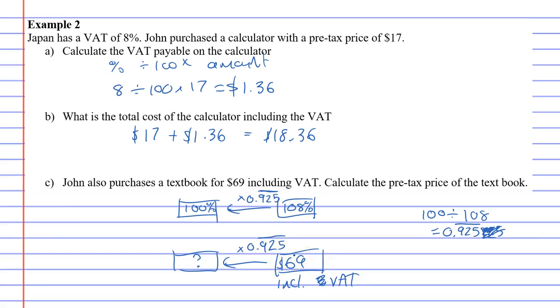And the way I'm going to write it in my calculator, I'm going to go 69 to represent the $69, and I'm going to multiply it by 0.925, 925, 925—write it as many times as you can. And that comes out to $63.89. So the original price before the VAT was added would be $63.89.